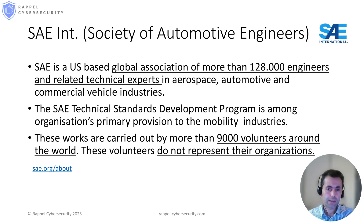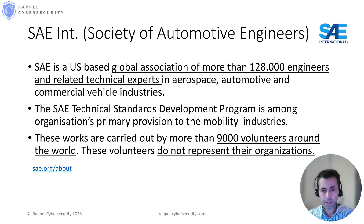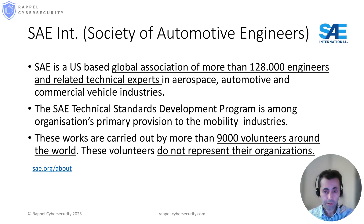SAE is seen as the ISO of the US because the missions of these two organizations are quite the same: developing standards. However, there is a clear difference between the two in terms of organization. SAE work is carried out by volunteer engineers all around the world who don't represent any organization. On the other hand, ISO work is handled by member bodies who represent their nations. SAE has approximately 128,000 experts all around the world, and 9,000 of them worked in the development of standards.